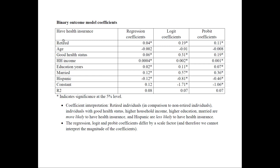Retired individuals, in comparison to those who are non-retired, would be more likely to have health insurance because these coefficients are positive and significant. Also, individuals with good health status would be more likely to have health insurance. Those with higher household income, higher education, and those that are married would also be more likely to have insurance. Hispanics would be less likely to have health insurance — we see a negative and significant coefficient.